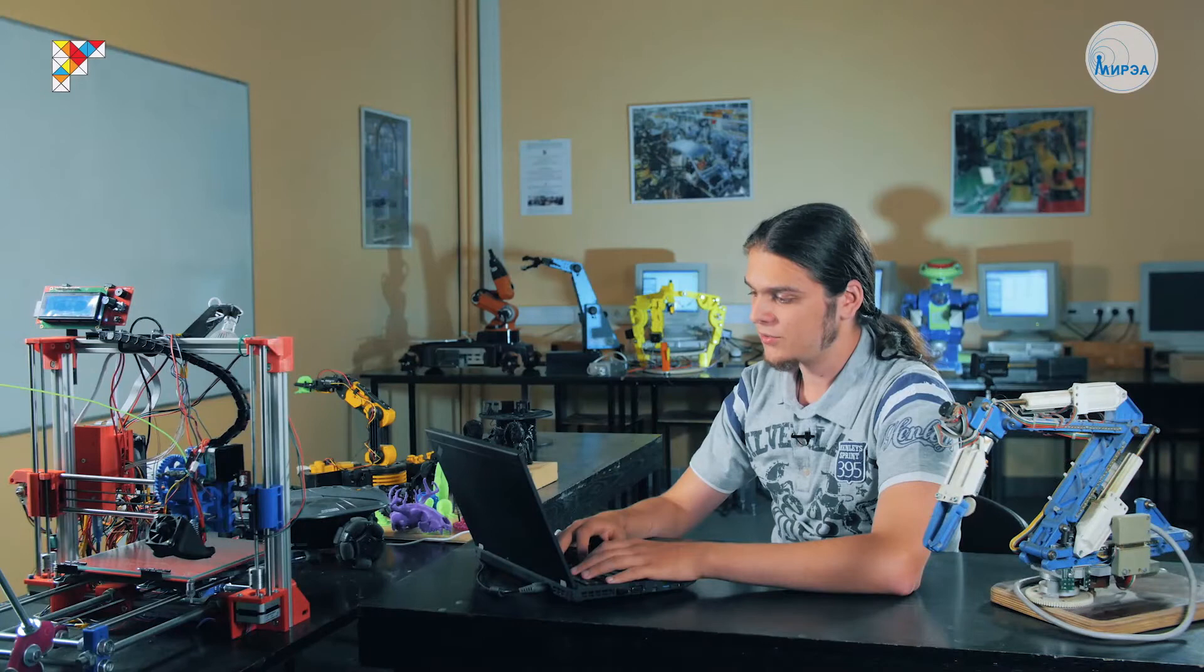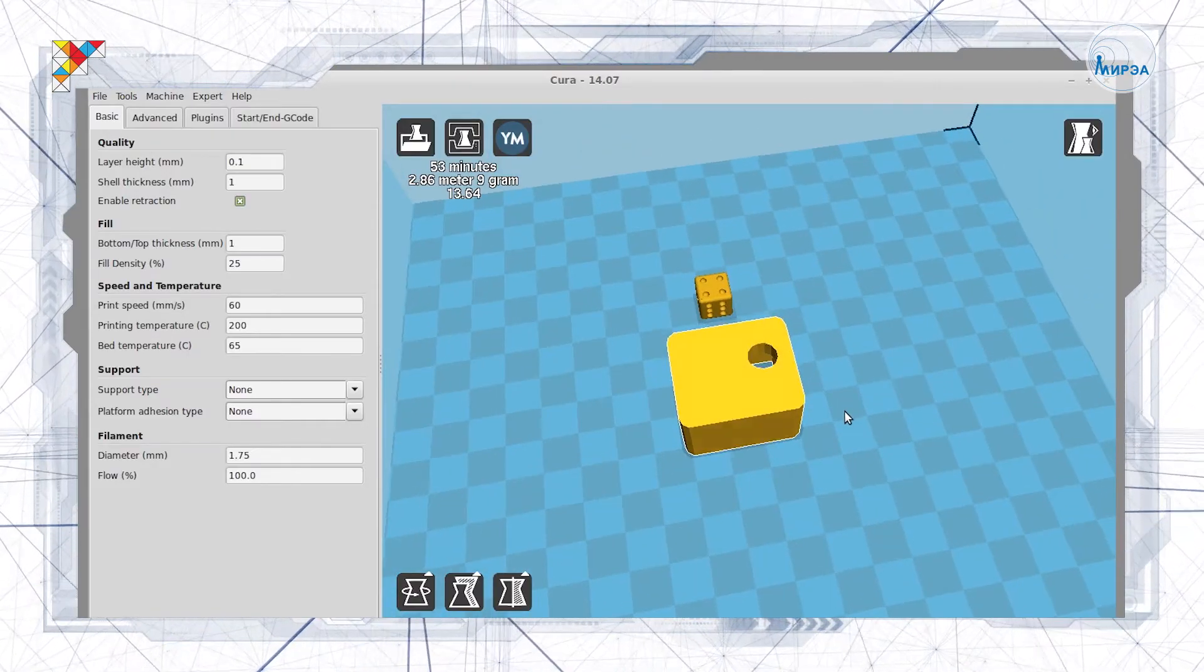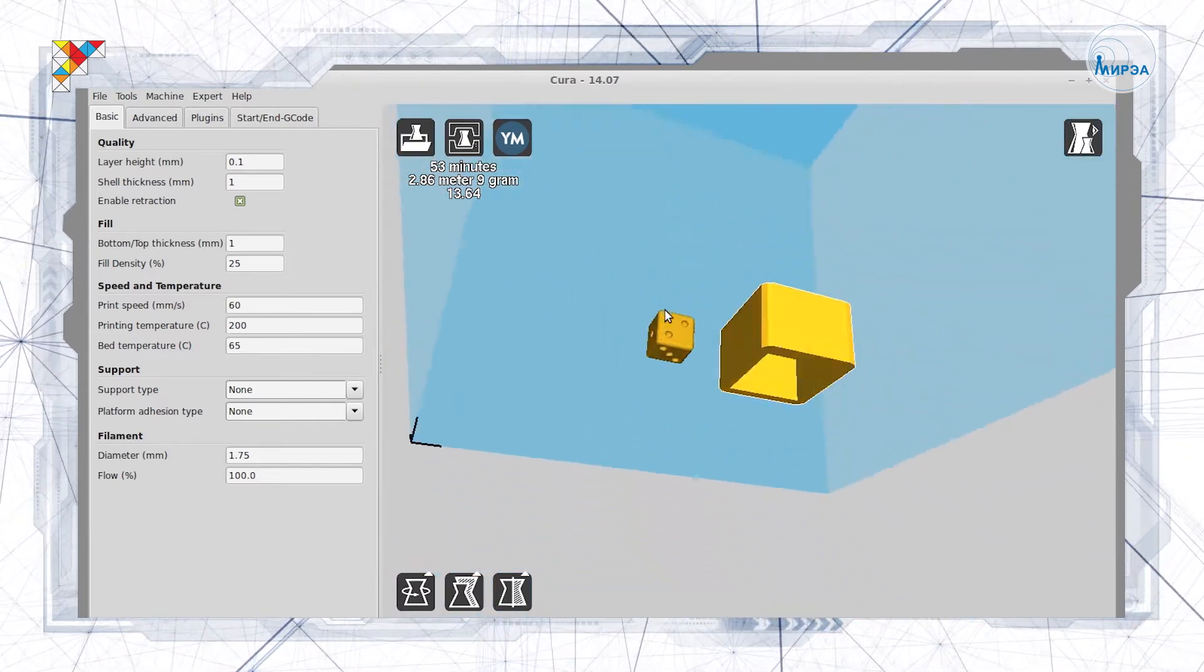Сейчас вы видите, что наш кубик потеснил корпус для одной из микросхем, которую мы недавно делали. Этот корпус спокойно может быть напечатан без всяких структур поддержки, но только если он правильно ориентирован.